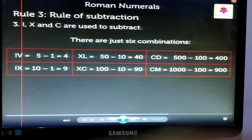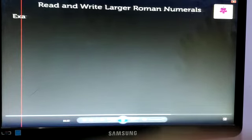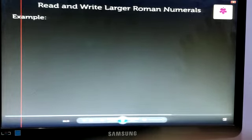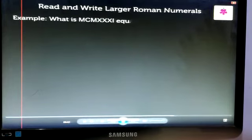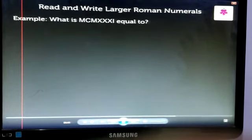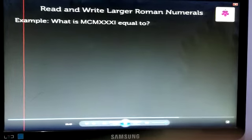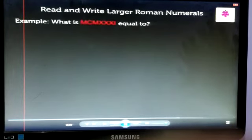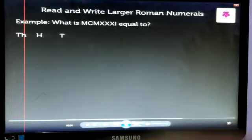Now, if larger Roman numerals are given, how do we read and write them? Look at example 1. What is MCMXXXI equal to? Keeping in mind rules explained earlier, we first write this number into 1000s,